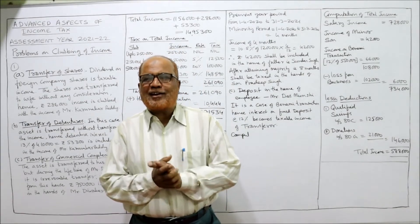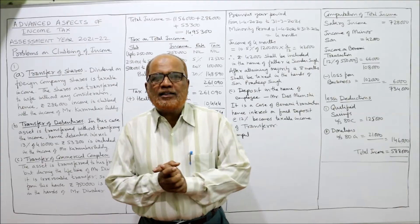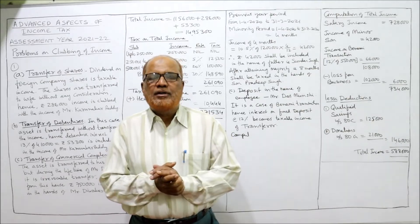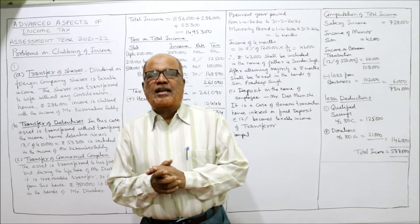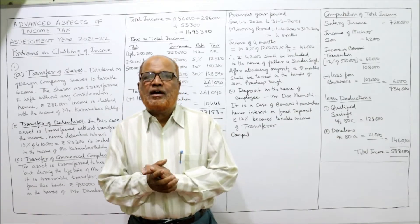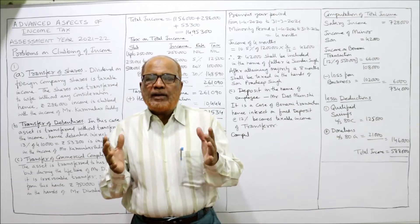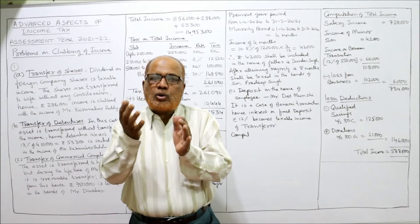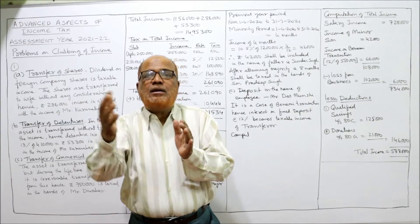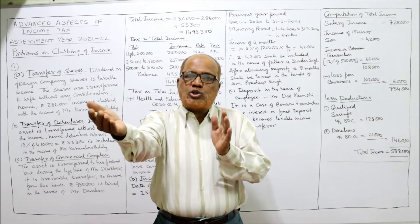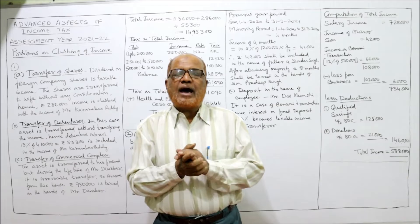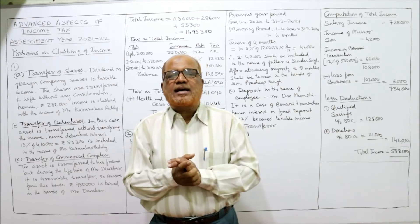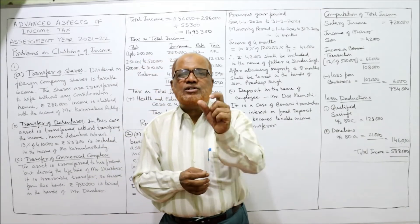Hello viewers, welcome to my channel. I'm Hashem Ali Khan. I'm starting the problem on clubbing of income, also called integration or aggregation of income. In the last video I explained the provisions of clubbing of income in detail. Normally a person is liable to pay tax on his own income, but sometimes a person is liable to tax not only on his own income but also on the income of another person. Income Tax Act has given the provisions regarding clubbing of income in sections 60 to 65.